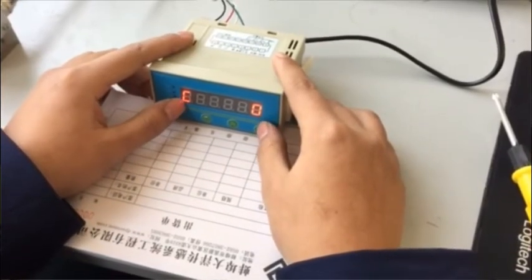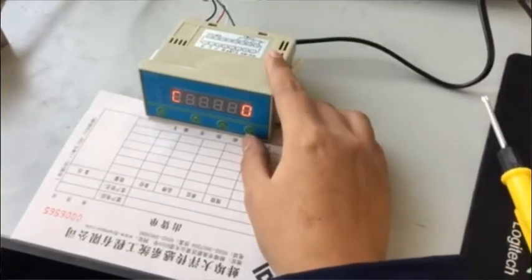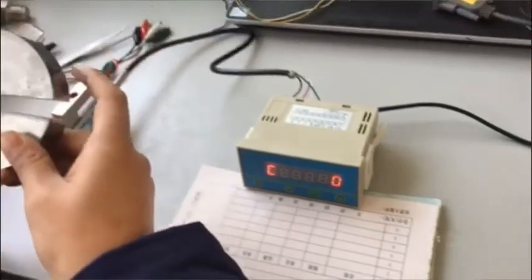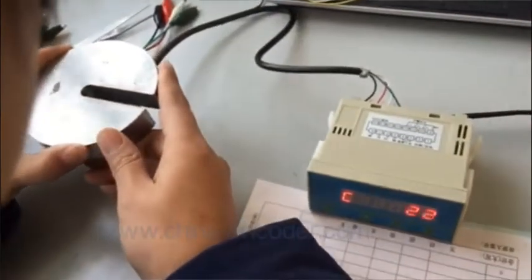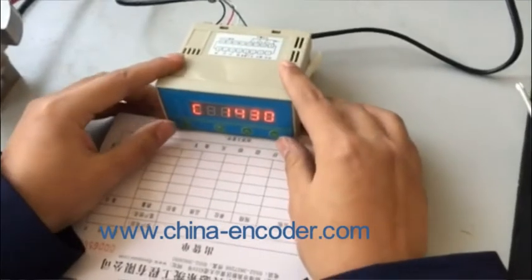Then press K2, see zero appears, and then calibrate the gain. At this time, add weight onto the sensor. Here is a 1KG weight. Not accurate.